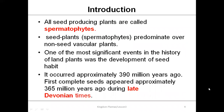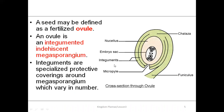All seed-producing plants are called spermatophytes. They predominate over the non-seed plants and exist at a much higher level compared to non-seed-producing vascular plants. One of the most significant events in the history of plants was the development of the seed habit, approximately 390 million years ago. The first complete seeds were observed around the late Devonian period, roughly 365 million years ago.